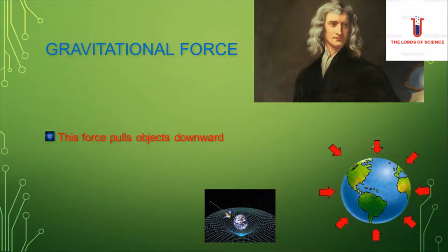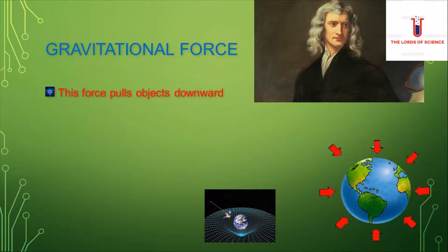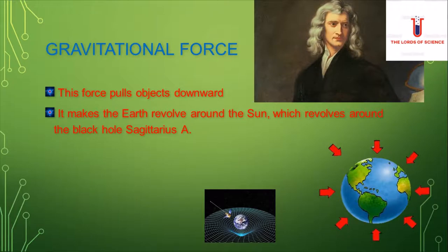Gravitational force. This force pulls objects downward. It makes the Earth revolve around the Sun, which revolves around the black hole Sagittarius A. This is just a little bit of extra information.